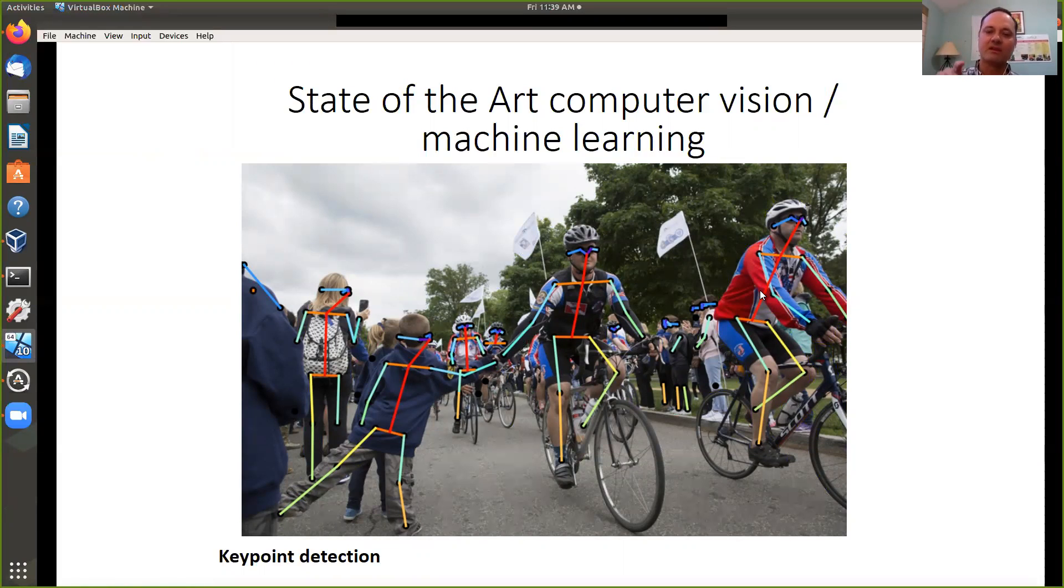A third example I want to show is keypoints. You can say these are people and there are important locations on the person like the foot or the shoulders. You determine where they are in the image, and that will give you the posture, for example, of these people.